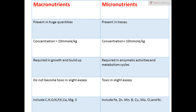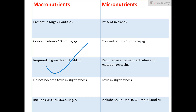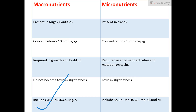Macronutrients are present in huge quantities while micronutrients are present in traces. Macronutrients have their concentration greater than 10 millimole per kg in the plant, and micronutrients have a concentration less than 10 millimole per kg. Macronutrients are mostly required in growth and building up of the plant, while micronutrients are mostly required in enzymatic activities and metabolism. Macronutrients do not become toxic in slight excess, while micronutrients certainly become toxic in excess.